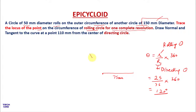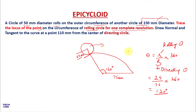From this point, make a line of 75 mm at an angle of 120 degrees. To make the rolling circle, the radius is 25 mm. This rolling circle rolls over the directing circle — that's why it is known as the rolling circle. So this is the question; let's draw it properly.